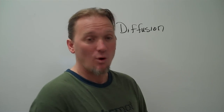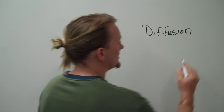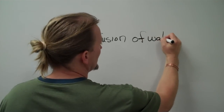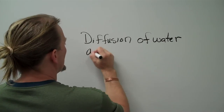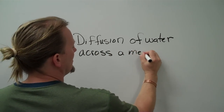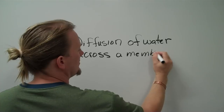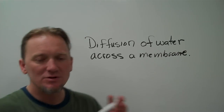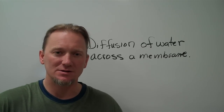So, from a higher concentration to a lower concentration. When we talk about osmosis, we're talking about diffusion of water. So I'm going to write: diffusion of water across a membrane. The diffusion of water across a membrane.